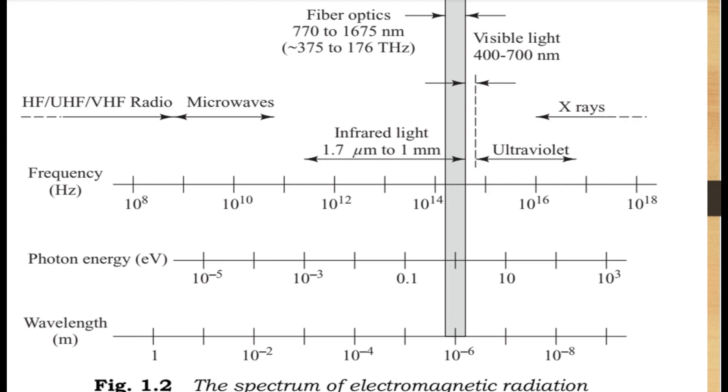All telecommunication systems use some form of electromagnetic energy to transmit signal. The spectrum of electromagnetic EM radiation is shown in figure 1.2.